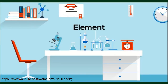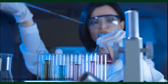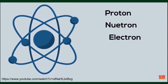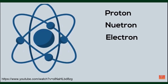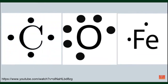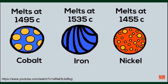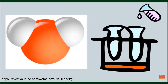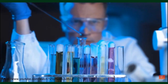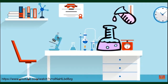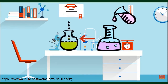An element is a pure substance — it cannot be broken down into a simpler substance by physical or chemical means, and it is made up of only one type of atom. An atom consists of a proton, neutron, and an electron. Common examples of elements are carbon, oxygen, and iron. Elements are arranged on the periodic table based on their number of protons. For example, sodium has 11 protons and potassium has 19. Each element also has its own unique set of properties. A compound is a pure substance of two or more elements chemically combined. When elements combine chemically, a new substance is created with different properties than the original elements.